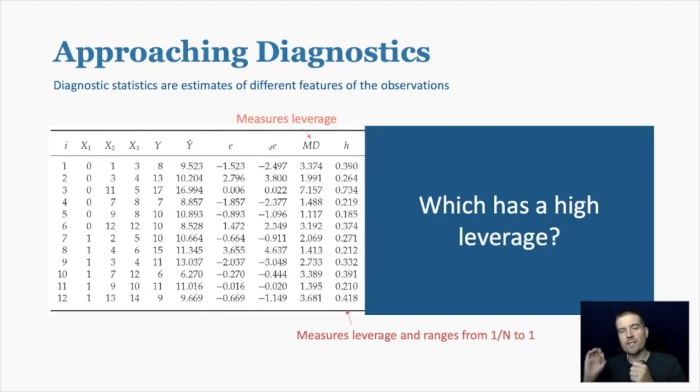Now if you go back, what does leverage refer to? Leverage is referring to how odd the combination of predictors are. In other words, case 3, there's something about case 3 that makes them have kind of weird values together. And we can look at x1, 2, and 3 and see that for the most part when someone scores really high on x2, they also tend to score fairly high on x3 and vice versa.